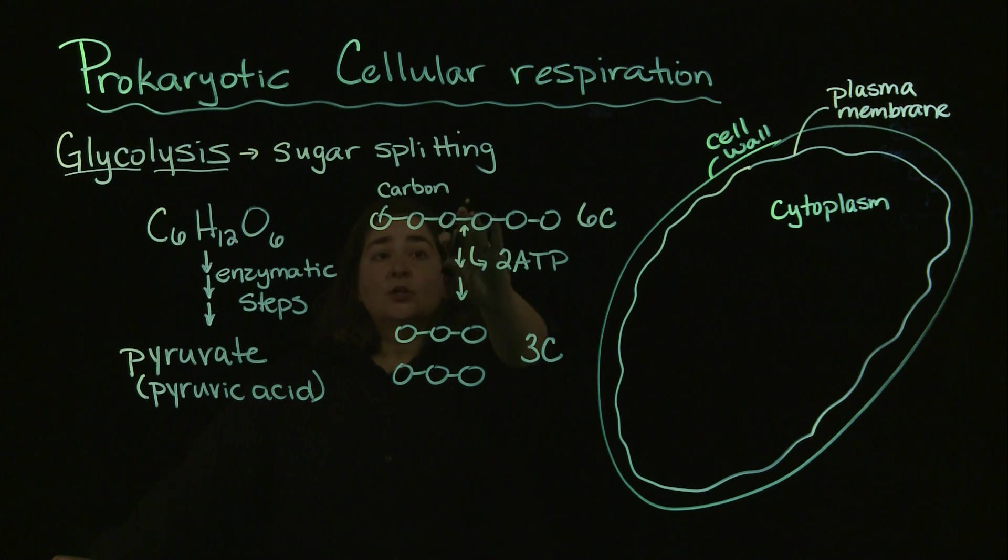You need to put in two ATP to split that six-carbon molecule. Out of the process, you will generate four total ATP in glycolysis. But because you had to put two in, it's kind of like investment. If you put two dollars in to make four dollars, you ended up gaining two dollars. Same thing with generating ATP within the cell. A little bit of ATP goes in, we get a little bit more out. So net out of this process, we're gaining two ATP.